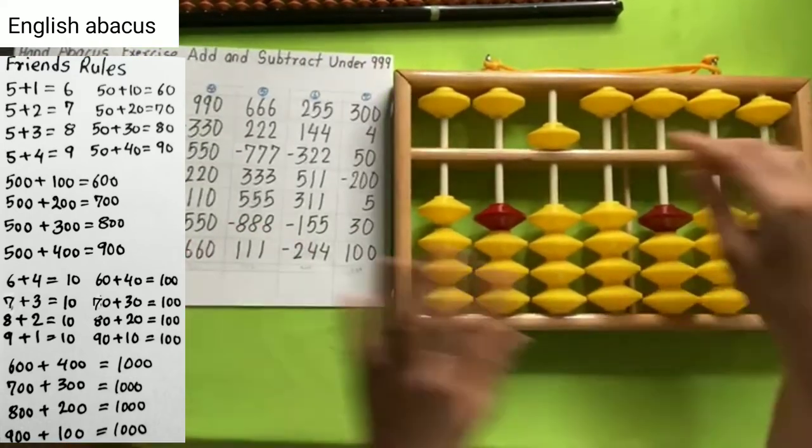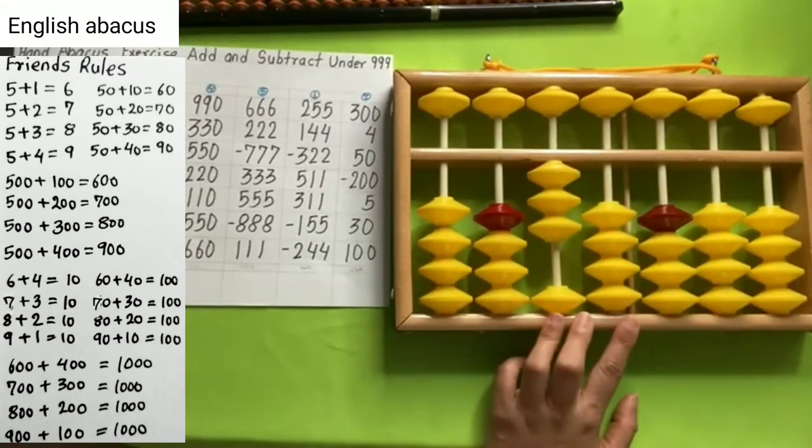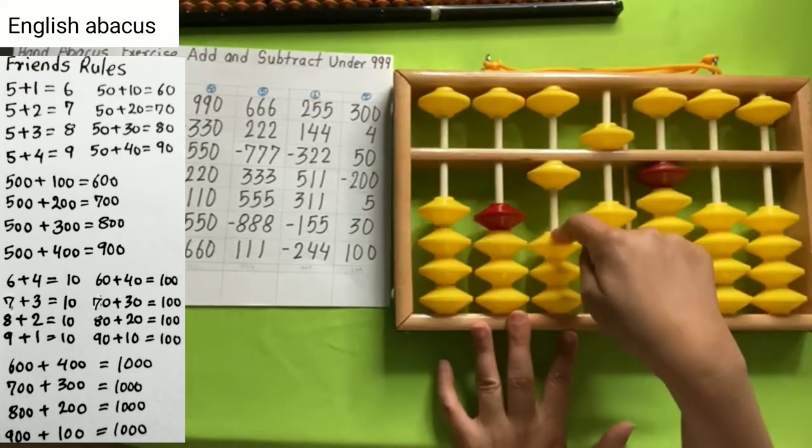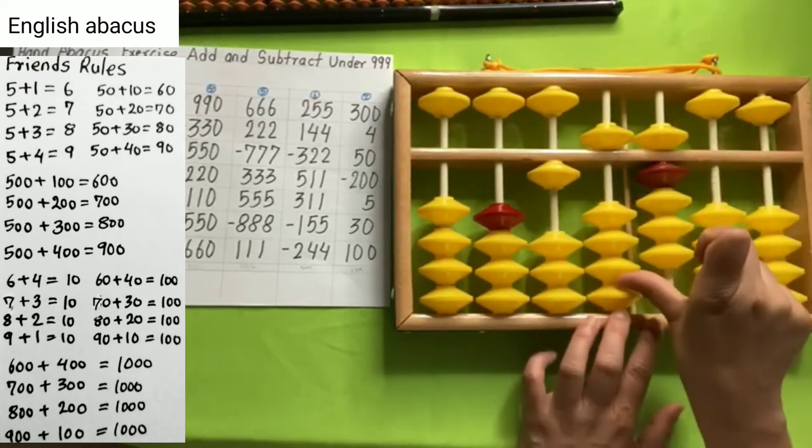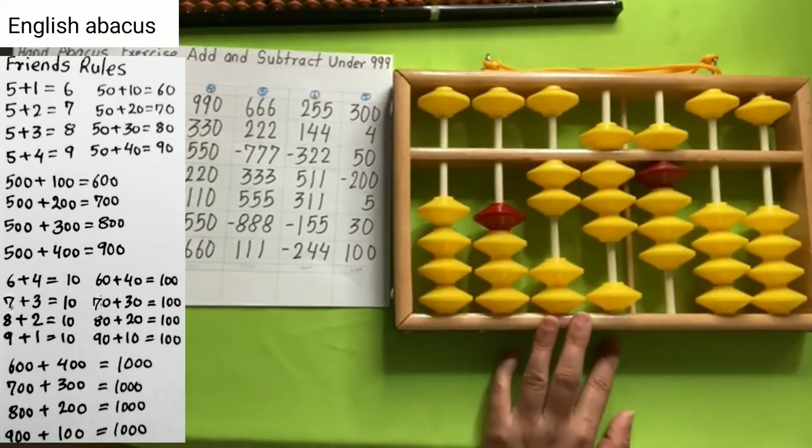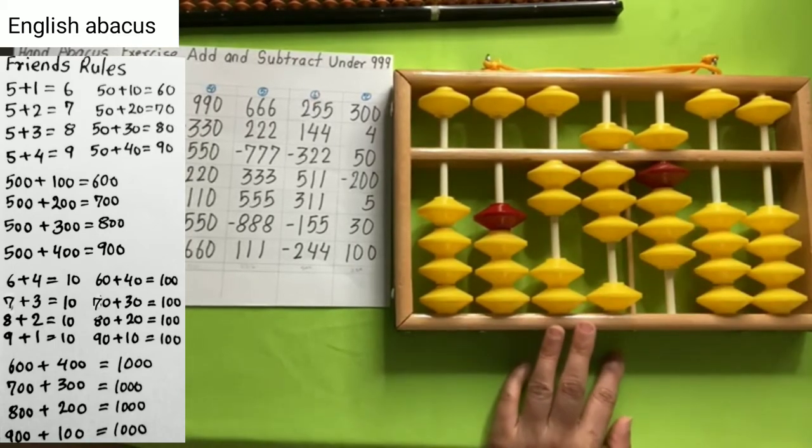And last one. Add 304, and 50, and reduce 200, and add 5, and add 30, and add 100, and the answer is 289.